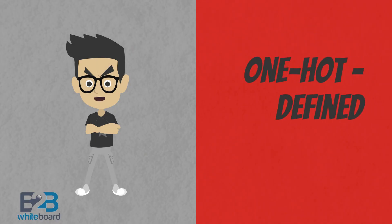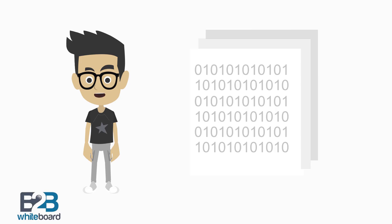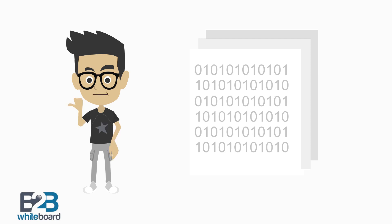Let me define what OneHot is. In digital circuits and machine learning, OneHot is a group of bits among which the legal combinations of values are only those with a single high one bit and all the others low. A similar implementation in which all bits are one except one zero is sometimes called one cold.